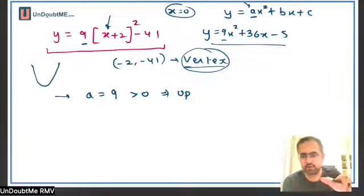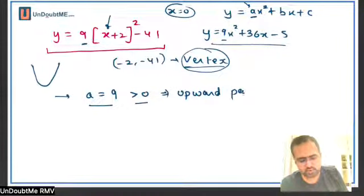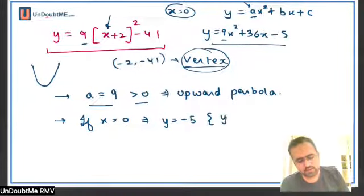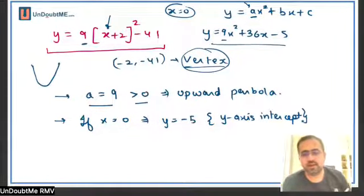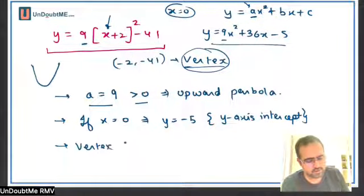Please watch this part of the lecture specifically. I'll tell you each thing again. a is 9, which is greater than 0 — it confirms it will be an upward parabola. If I put x equals 0, that gives y equals negative 5. So this is the y-axis intercept. Then comes the vertex: the vertex of this graph is negative 2 comma negative 41.